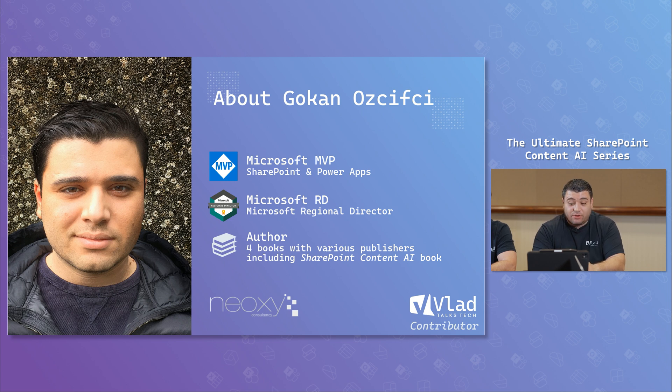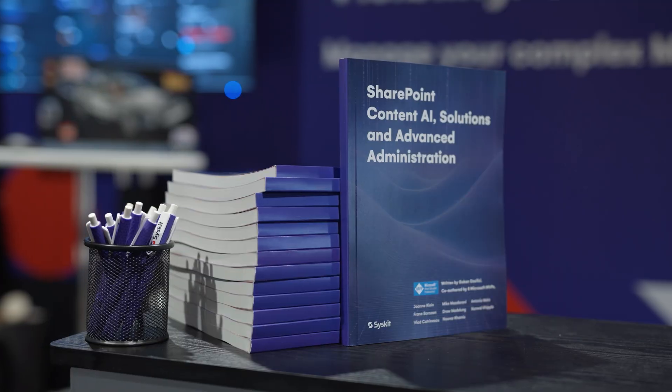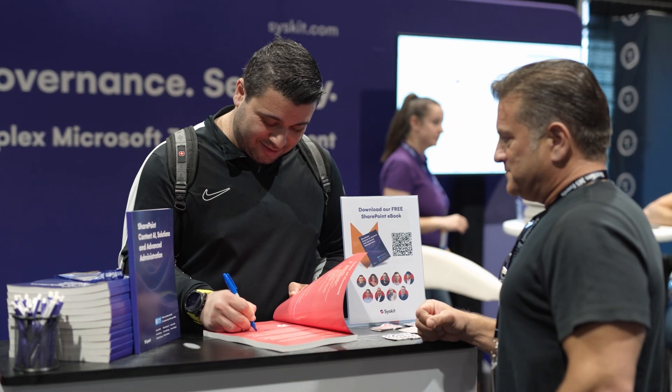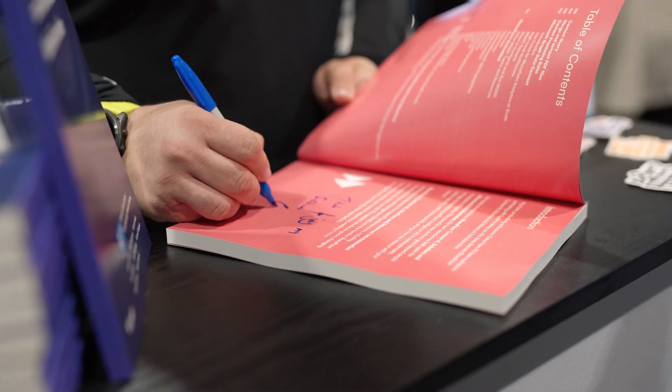Gokunas is also the author of four different books, including one on SharePoint Content AI — so he's exactly the right person for this series. It wasn't just him though; nine other MVPs worked together on that book. That ebook is actually available for free, and the link will be in the description below.